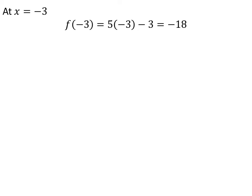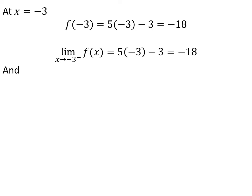Let us check the function 5x - 3 continuity at x = -3. The function is defined at x = -3 and its value is -18. Now, find the limit of the function when x approaches -3 from the left — the value of the limit is -18. Similarly, the right limit is -18.